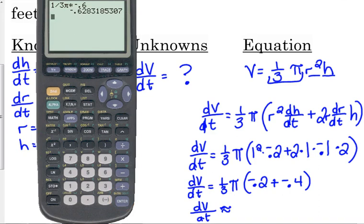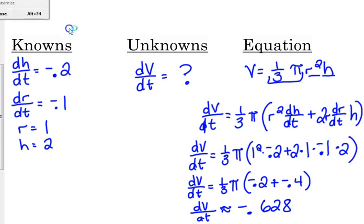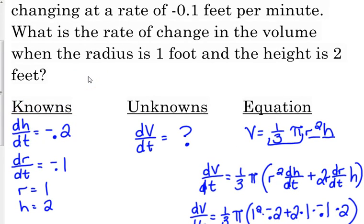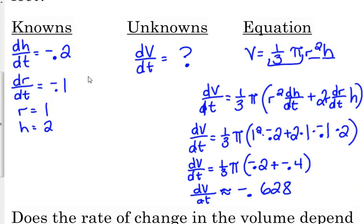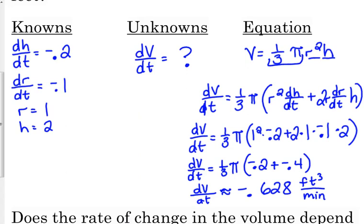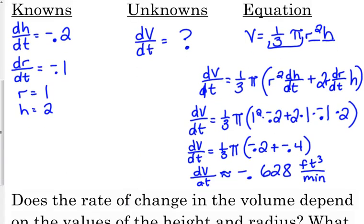The rate of change of the volume is negative 0.628 cubic feet per minute, because we're talking about the volume change. Just as a little reminder, when you're doing an AP exam, you always want to be accurate to three decimal places. Don't round. We call it truncating, just write the first three numbers, and you don't have to worry about rounding.